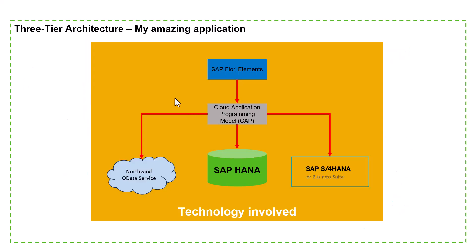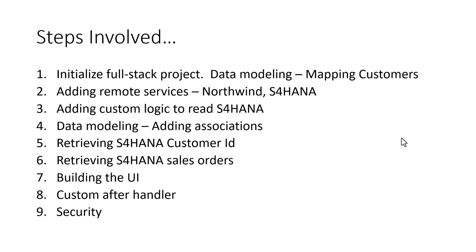Just a quick recap of the three-tier architecture that we are going to be building. The UI is going to be built with SAP Fiori elements. The application logic is going to be CAP. And we also looked at the persistence layer where we have data coming from three different sources: the Northwind data source, the SAP S/4HANA system, and also from the local system.